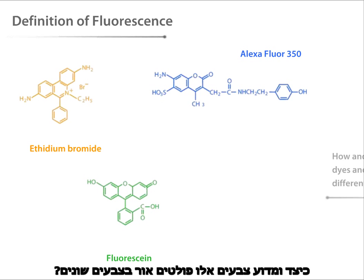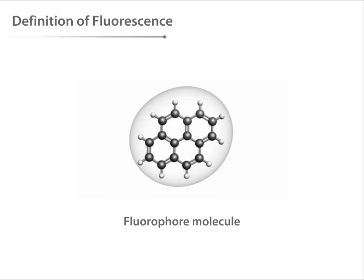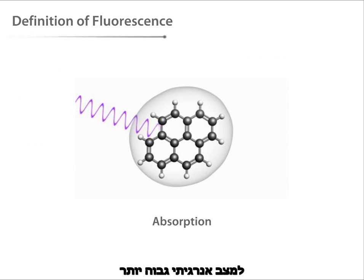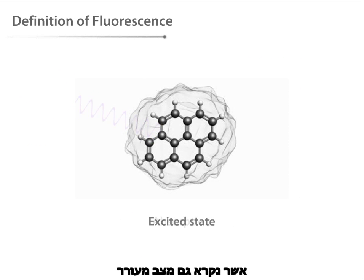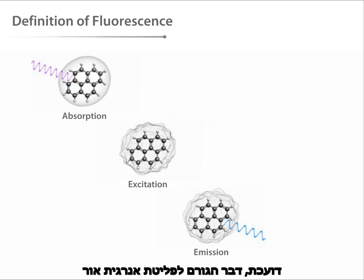How and why do these dyes and stains emit different colors of light? Some molecules are capable of being excited via absorption of light energy to a higher energy state, also called an excited state. The energy of the excited state, which cannot be sustained for long, decays or decreases, resulting in the emission of light energy. This process is called fluorescence.